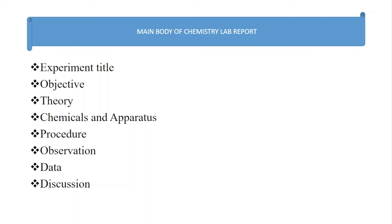Next, write the chemicals and apparatus separately. When listing chemicals and apparatus, note that all items listed in your manual may not have been used due to scarcity. Write only the actual chemicals and apparatus you used in the experiment. The next item is procedure, which should be written in past passive form and paragraph form.